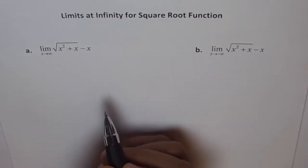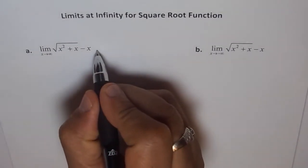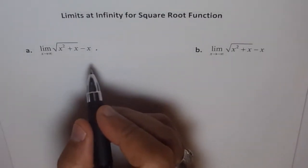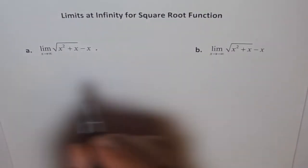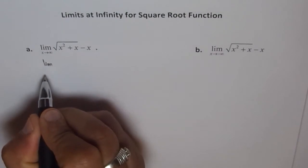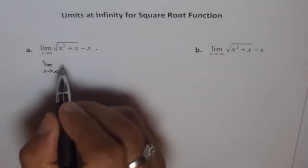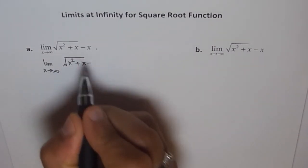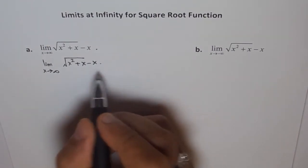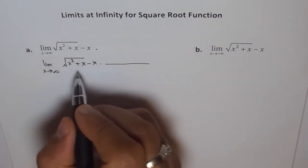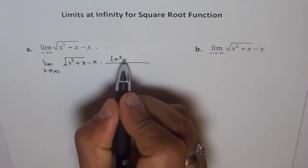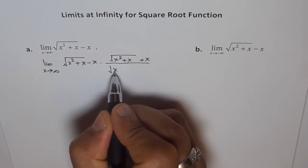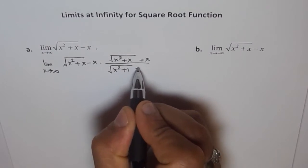To rationalize, we multiply and divide by the conjugate. What is the conjugate of this? So we write: limit as x approaches infinity of sqrt(x² + x) minus x, all over 1. When you rationalize, you multiply and divide by the conjugate, which is sqrt(x² + x) plus x. So we have that in the numerator and the same thing in the denominator.